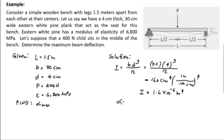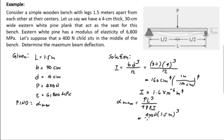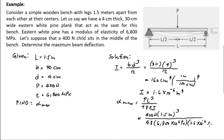The maximum deflection for a concentrated load at the center of the beam uses the formula: δ_max = PL³ / 48EI. Substituting: P = 400 N, L = 1.5 m, E = 6,800 × 10⁶ Pa, I = 1.6 × 10⁻⁶ m⁴. So: δ_max = (400 × 1.5³) / (48 × 6,800 × 10⁶ × 1.6 × 10⁻⁶).